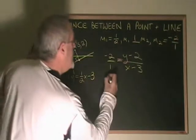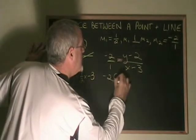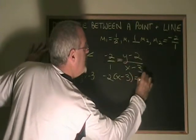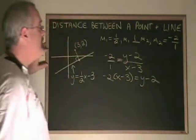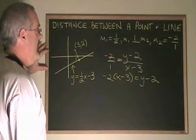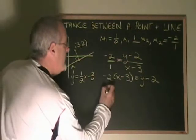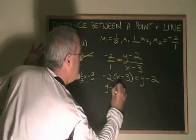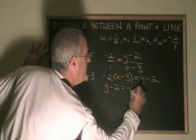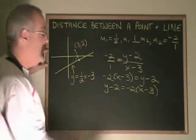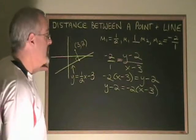Cross multiplying, we get negative 2 times x minus 3 equals y minus 2. I'm going to write this backwards. y minus 2 equals negative 2 times x minus 3. I am proceeding to isolate my y on the left side of the equal sign.